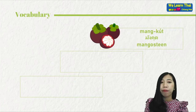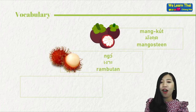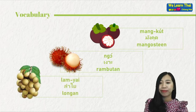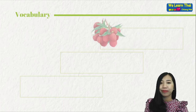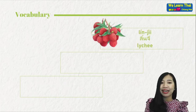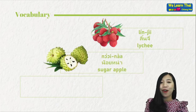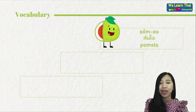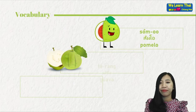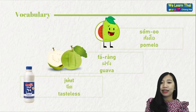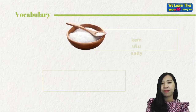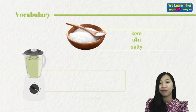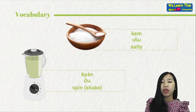For vocabulary: มังคุด — mangosteen, งาเล่มบุทัน — rambutan, ลำไย — longan, ลิ้นจี่ — lychee, น้อยหน่า — sugar apple, ชมพู่ — rose apple, ส้มโอ — pomelo, ฝรั่ง — guava. แข็ง means hard, อ่อน means soft, ปั่น means spin or shake.